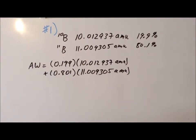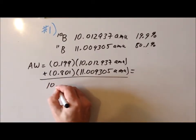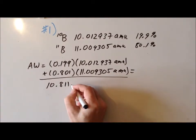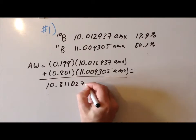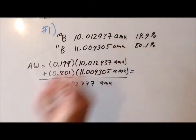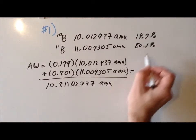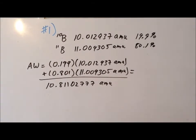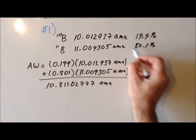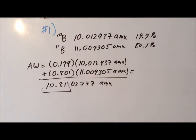Then it's a relatively straightforward calculation. We multiply and add, and we get a result of 10.81102777 atomic mass units. We have a large number of significant figures here, but in our percentages we only have three sig figs. We would truncate this down to three sig figs. But for the sake of comparison to the results that we find on the periodic table — where they use more significant figures for the percentages — the mass of 10.811 atomic mass units is exactly the value you'll find in the periodic table.